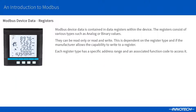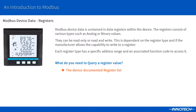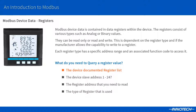The device data is held in the device within storage areas called registers. These can be read only or read and write, and depends on the register type. To read back the device data value, you must first obtain the documented register list. Without this information, you will have a difficult time locating the registers that you need. There is no auto discovery of data in Modbus. You also need the device slave address, the registers required for the project, the type of register being used, and if any scaling needs to be applied to the value from the device.